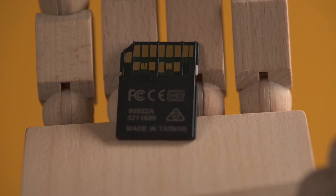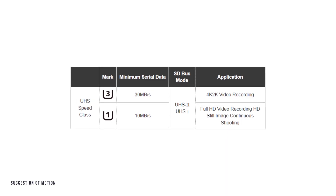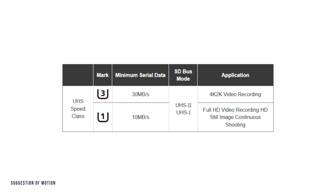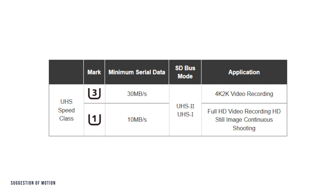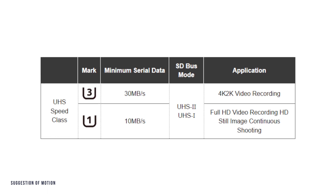Another important thing to keep note of is the UHS speed classes. Currently, UHS has two speed classes, which are 1 and 3, and denote the minimum write speeds. These are marked on the card with a U with either a 1 or a 3 inside of it. A class 1 speed promises a minimum write speed of 10 megabytes per second, but if you want a card that can do 4K recording, then you will need a class 3 card, which promises a minimum write speed of 30 megabytes per second. Both SDHC and SDXC UHS-1 and UHS-2 cards come with class speeds of 1 and 3.